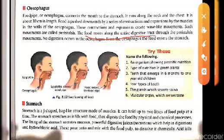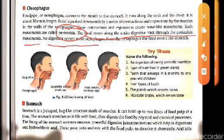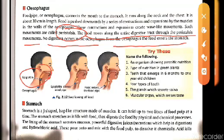The food moves along the entire digestive tract through peristaltic movement. Importantly, no digestion occurs in the oesophagus — it is simply a passage, a pipe from the mouth to the stomach. We have also covered the function of the epiglottis. Today's topics are now completed.